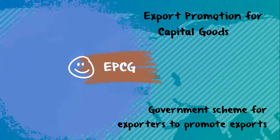EPCG stands for Export Promotion for Capital Goods. It is a scheme that gives manufacturers the facility to import capital goods aimed at export production at a concessional rate of duty — usually five percent — against a certain level of export obligation.